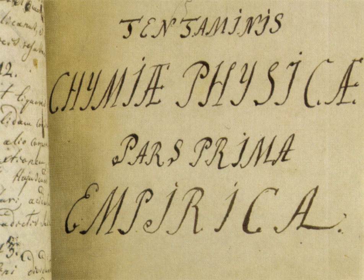One milestone was the publication in 1876 by Josiah Willard Gibbs of his paper 'On the Equilibrium of Heterogeneous Substances.' This paper introduced several of the cornerstones of physical chemistry, such as Gibbs energy, chemical potentials, and Gibbs phase rule. The first scientific journal specifically in the field of physical chemistry was the German journal Zeitschrift für Physikalische Chemie, founded in 1887 by Wilhelm Ostwald and Jacobus Henrikus van't Hoff. Together with Svante August Arrhenius, these were the leading figures in physical chemistry in the late 19th century and early 20th century. All three were awarded the Nobel Prize in Chemistry between 1901 to 1909.